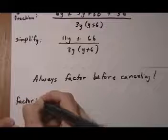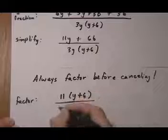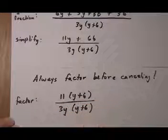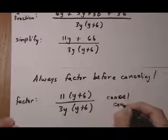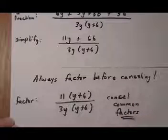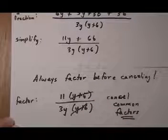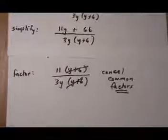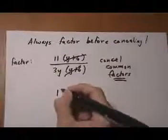So we need another factor step. The numerator factors into 11 times y plus 6 and keep the denominator. Now we look for common factors. Cancel common factors. It has to be factors. y plus 6. Yes, that's a common factor being multiplied into the top and bottom. It's gone. And nothing else cancels. So now we're going to have 11 over 3y.